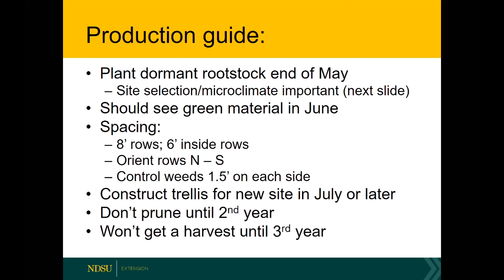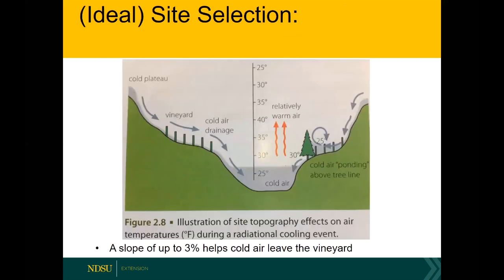For site selection — ideally your vineyard would be on a slope that allows colder air to drain off and away. On the left, where the green stakes are represents your vineyard — that's what you ideally want. On the right, the vineyard is on a slope but a windbreak is actually going to trap cold air. So ideally you'd have air being unimpeded in its flow to the lower portion of the valley.